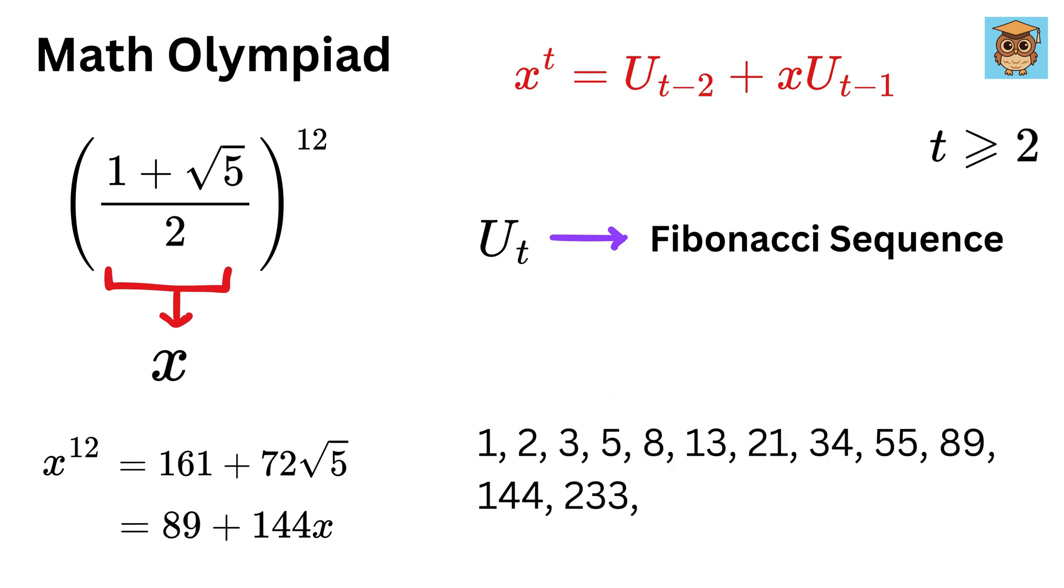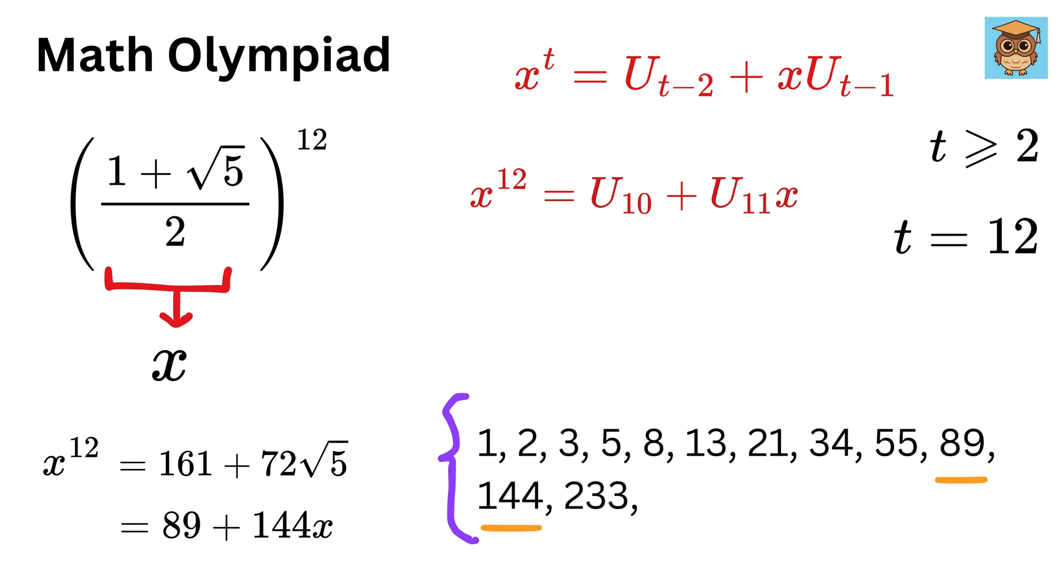To find x¹², we put t=12. So the formula becomes this. Check this sequence, and we have the 10th term as 89 and 11th term as 144. Thus, x¹² = 144x+89, which is the same as the one we found using basics.